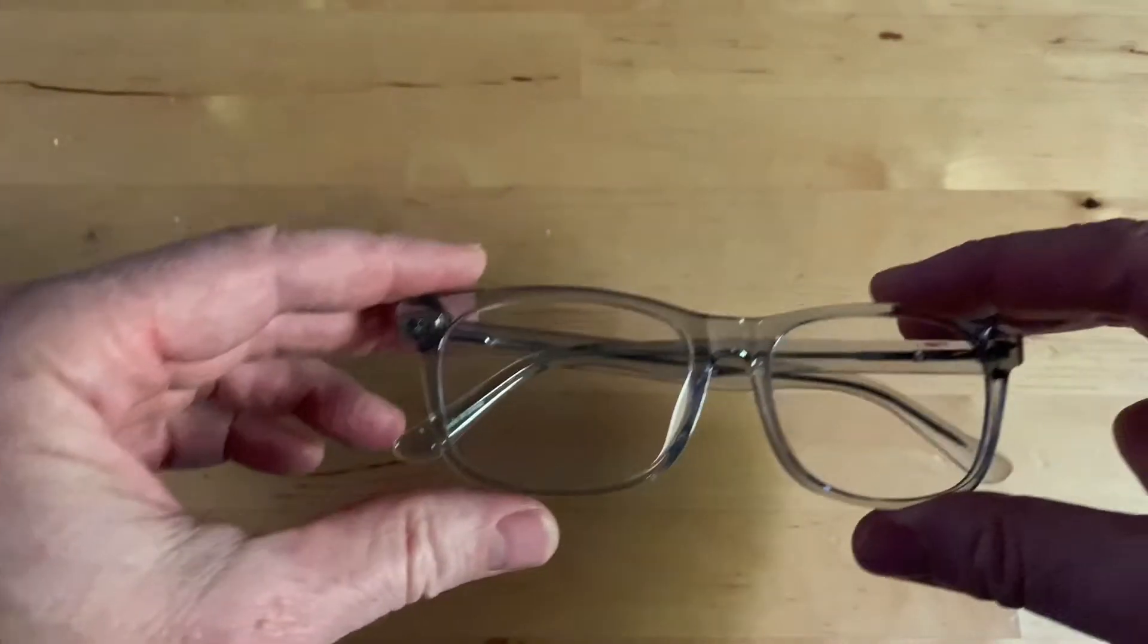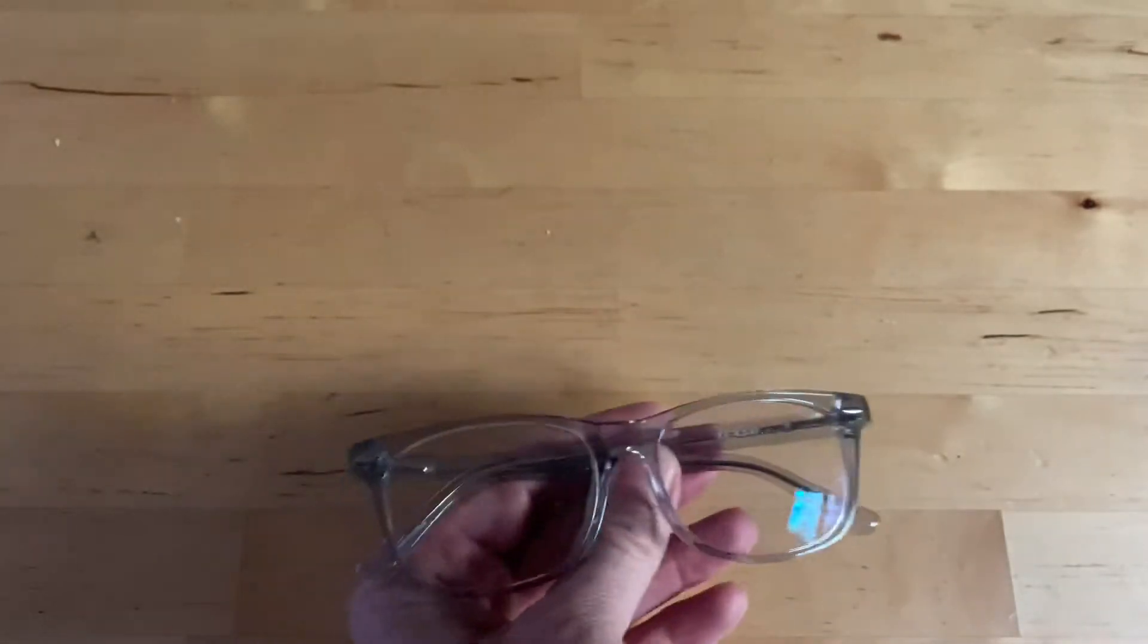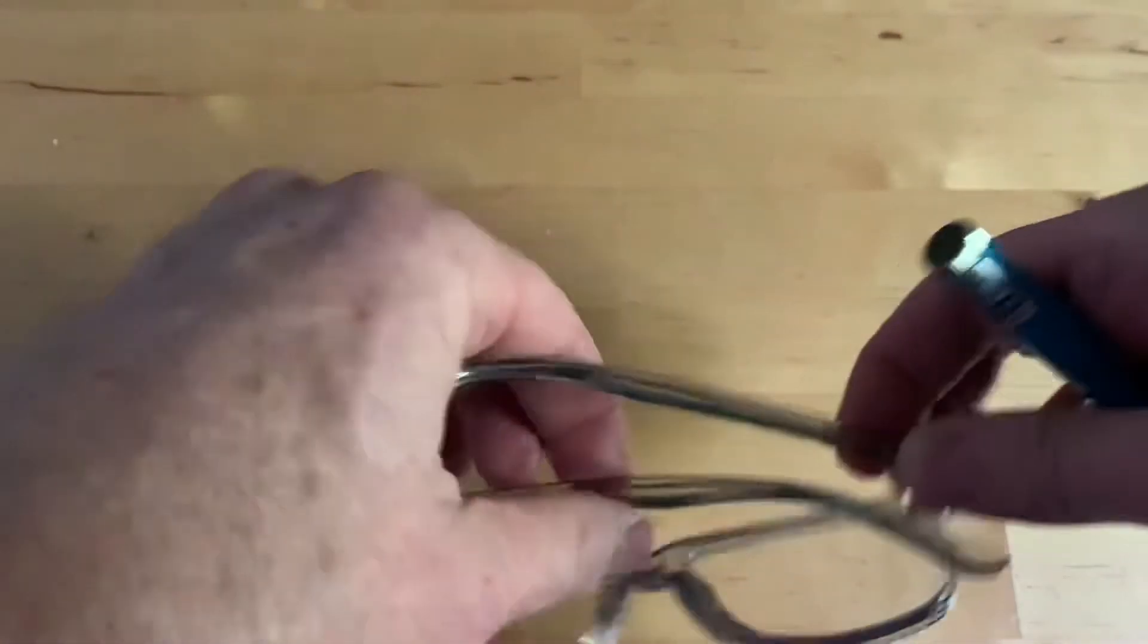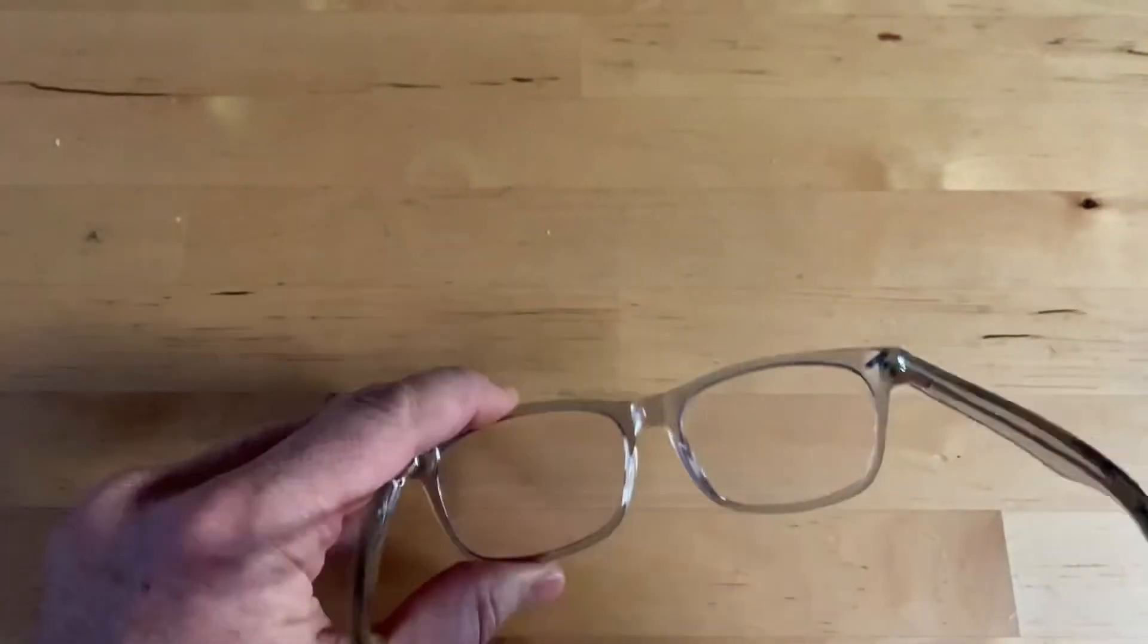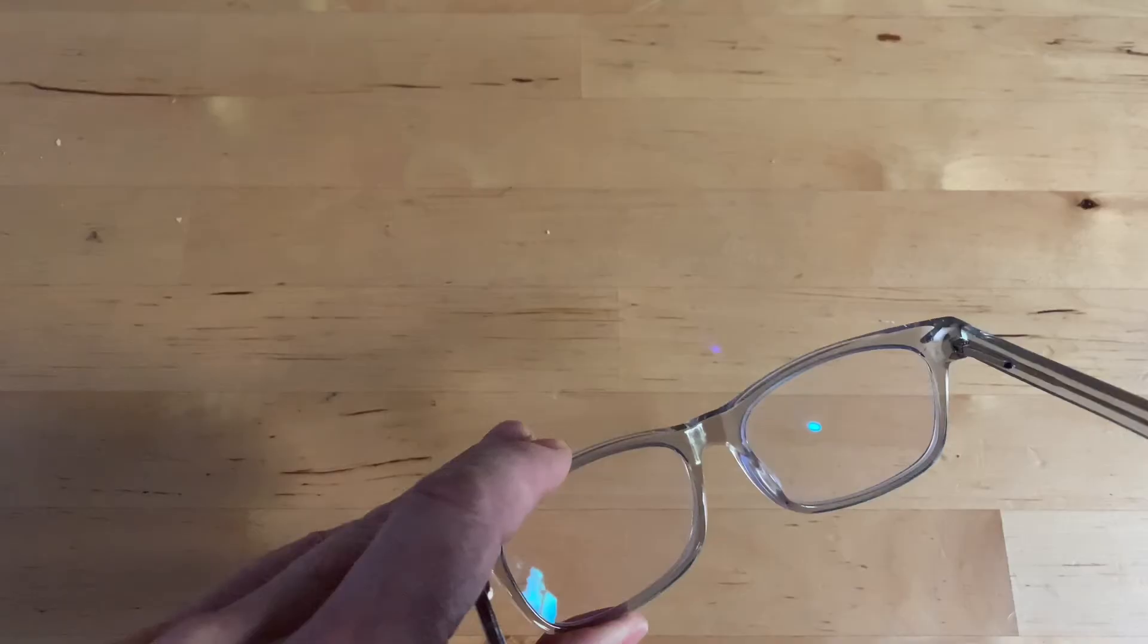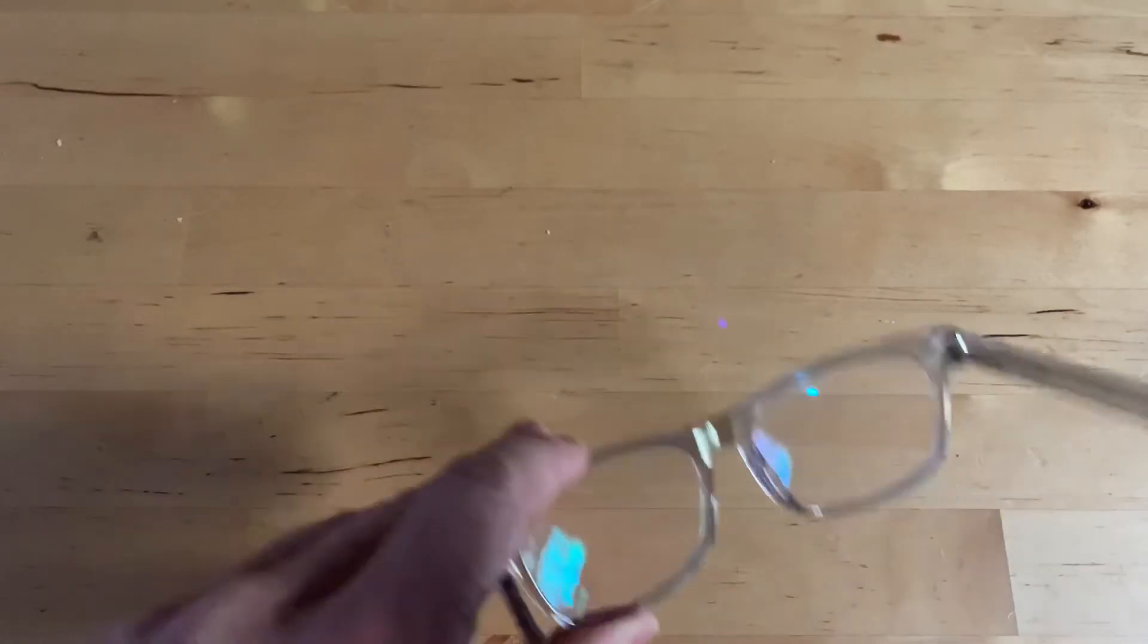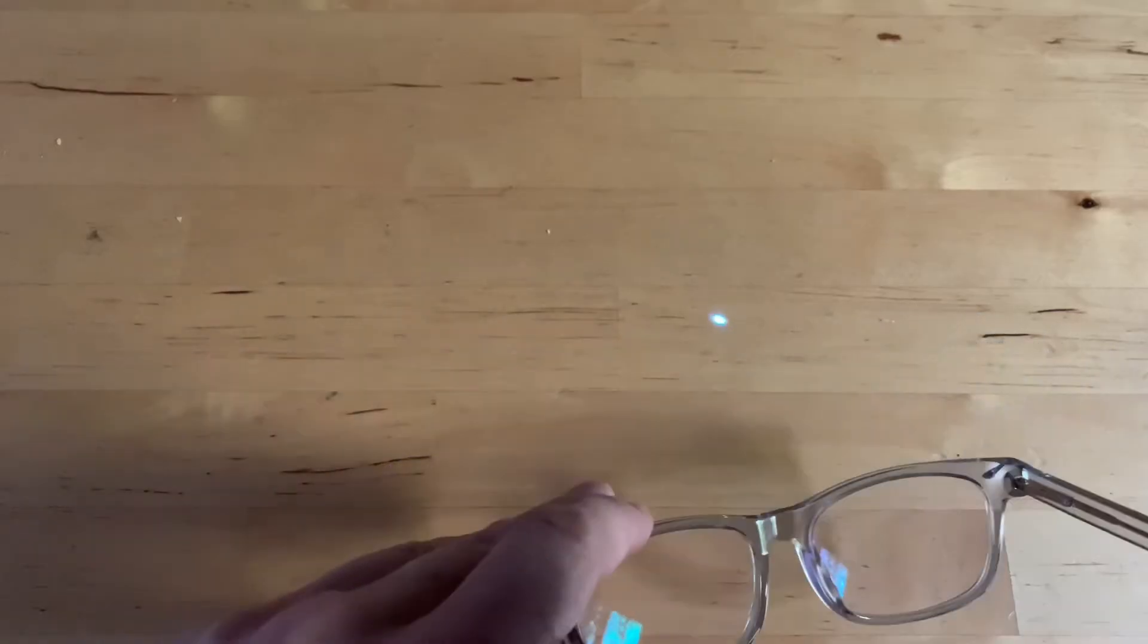The Zenni Optical glasses are around 30 bucks and they're prescription quality, but they're just a regular clear lens for people who don't need a prescription. They also do prescription ones and reading glasses. See how much the dot on the top changes when I shoot it through the lens. This definitely blocks the blue.